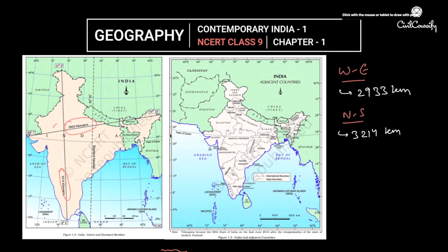The Tropic of Cancer passes through India dividing it into almost two equal parts. The states it passes through from west to east are: Gujarat, Rajasthan, Madhya Pradesh, Chhattisgarh, Jharkhand, West Bengal, and in northeast India — Tripura and Mizoram. Note that Odisha is a state where it does NOT pass, which is a common mistake. Chhattisgarh is where it does pass.